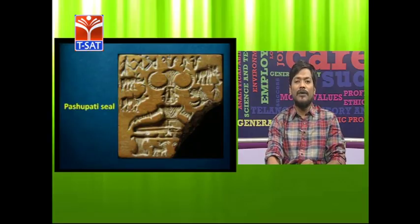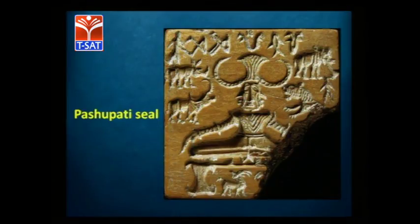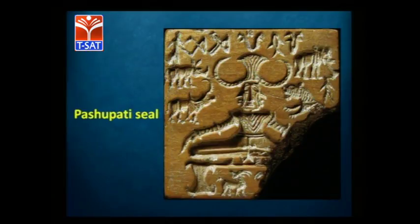These are the basic dates and there are some artistic examples important for this exam. This seal, the Pashupati seal, came from the Indus Valley Civilization. Seals were used for business transactions and trade largely. This is the most important seal from Indus Valley — the Pashupati seal — which has a figure seated in the center, a sort of headgear that looks like horns, and animals on either side.